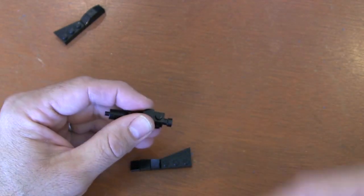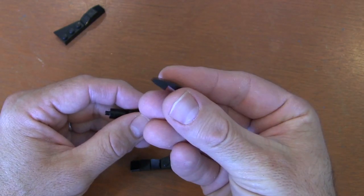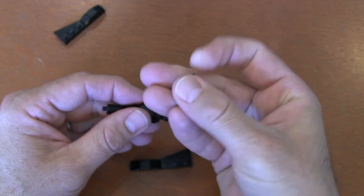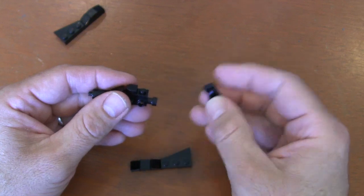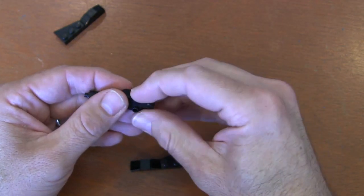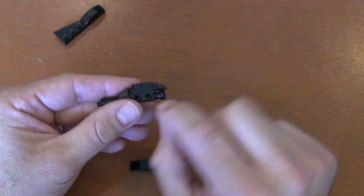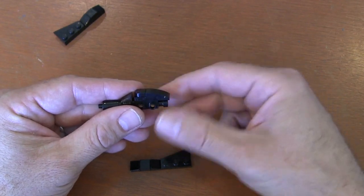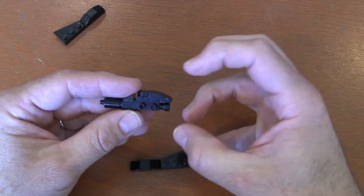Then I'm going to grab a 2x1 curved slope piece and put it on the back stud. It slopes down and over that back exhaust port that we have for the big flames of this Batmobile.